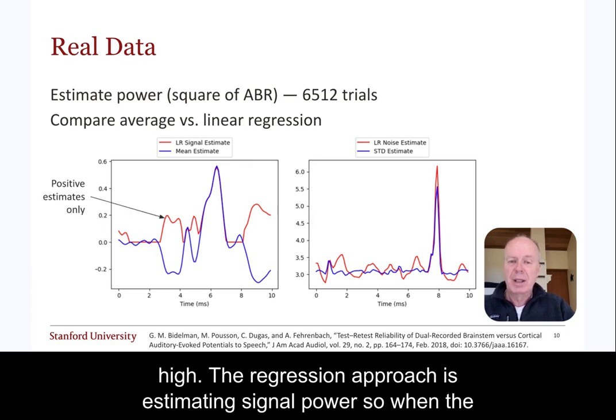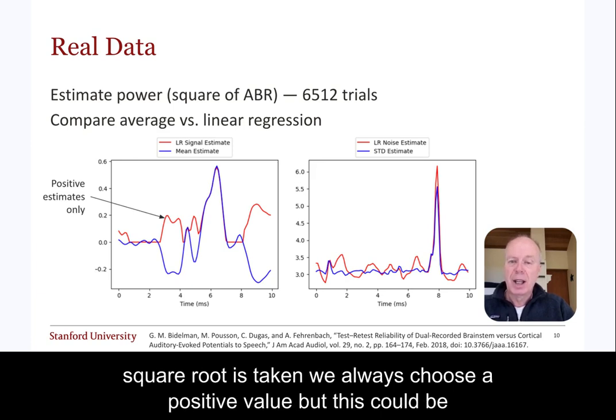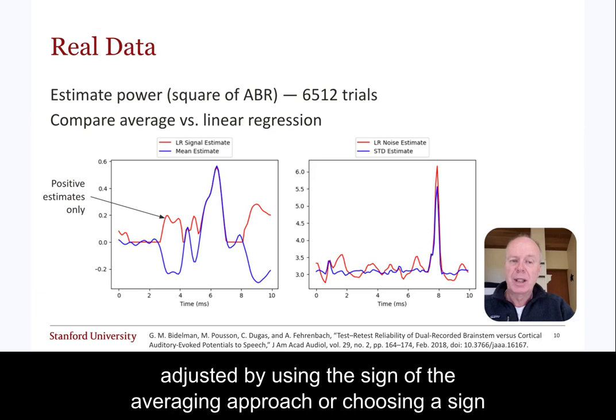The regression approach is estimating signal power, so when the square root is taken, we always choose the positive value. But this could be adjusted by using the sign of the averaging approach, but choosing a sign that minimizes the spectral splatter.